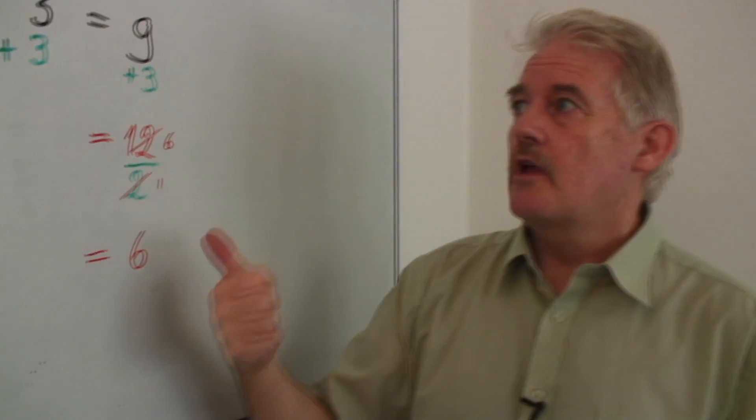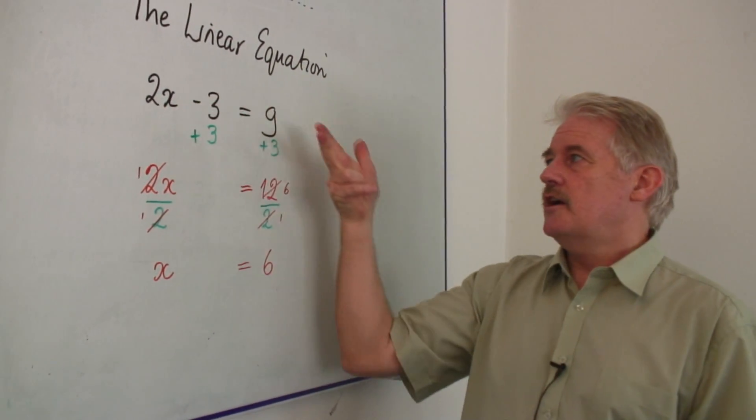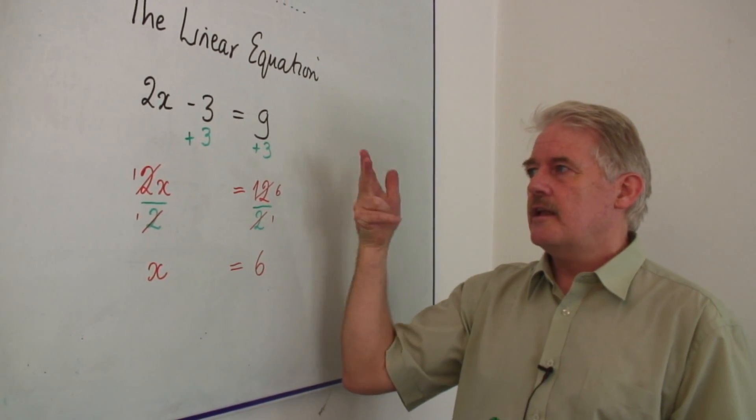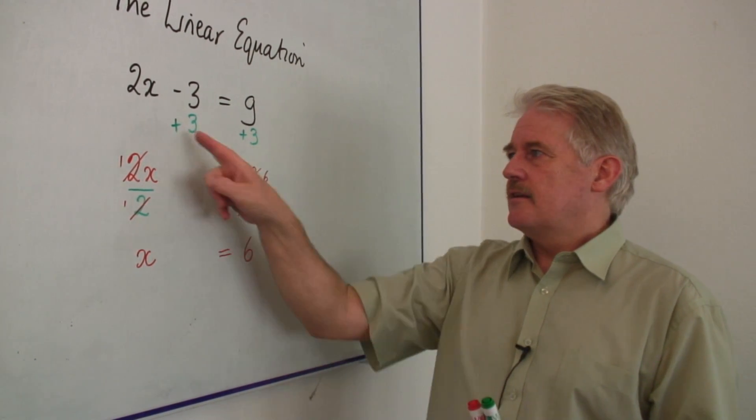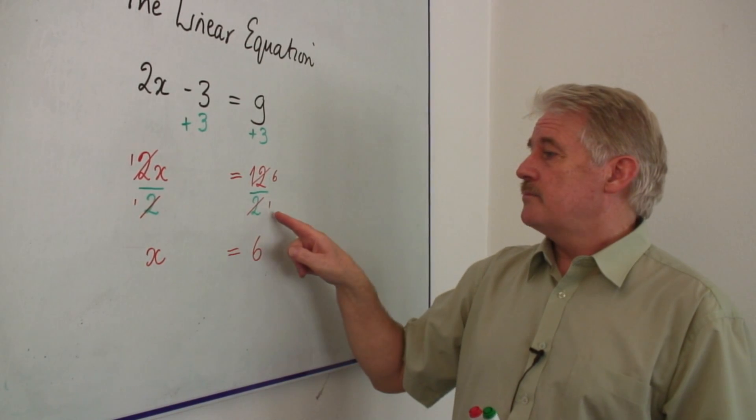So let's just go through the points. First of all, the most important thing, the two sides are equal. You've got to make sure they always stay equal. Do the same to both sides. Here I add 3.